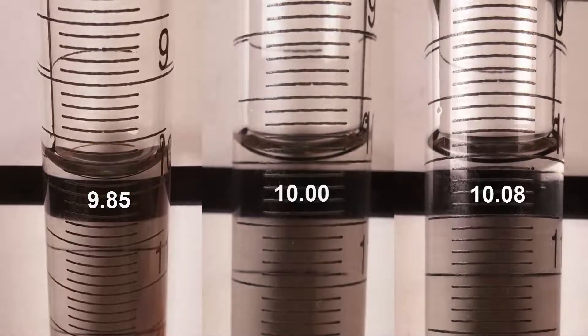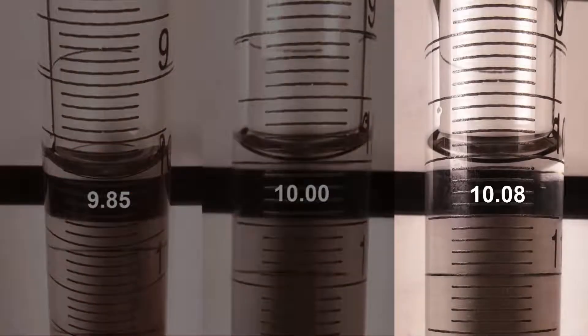The same problem occurs when the meniscus is above eye level, such as in this example. The apparent reading in this example is 10.08. Notice again how the encircling ring of the 10.00 milliliter mark can be seen around the burette.